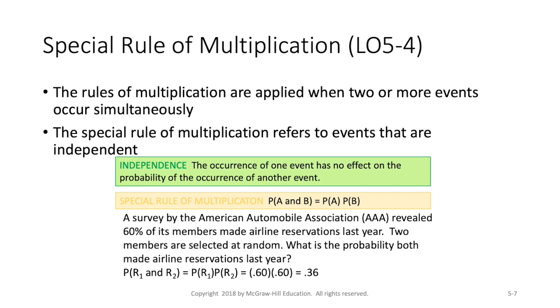And so for this one, we would use the special rule of multiplication. And we just take the probability that one made the reservation, multiply it times the same probability for the second to get the probability that two of them made reservations. And that would be this 0.36 here.